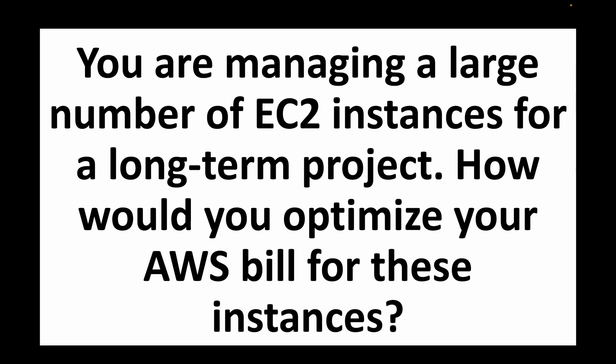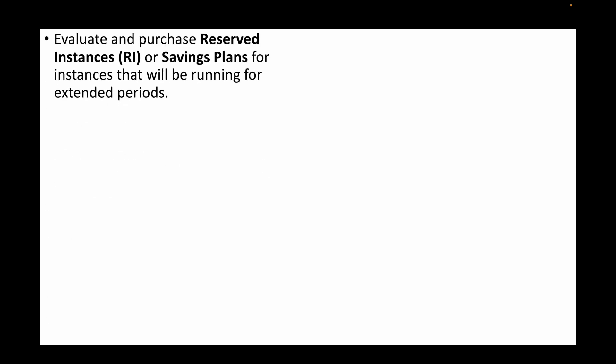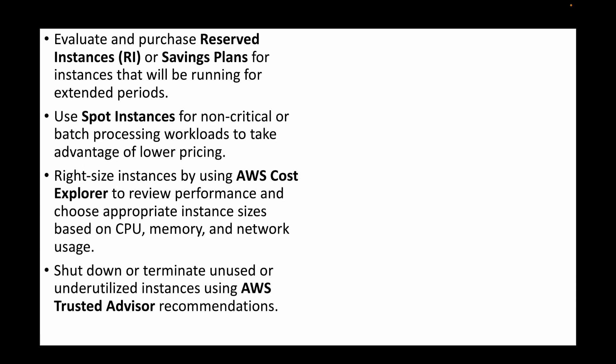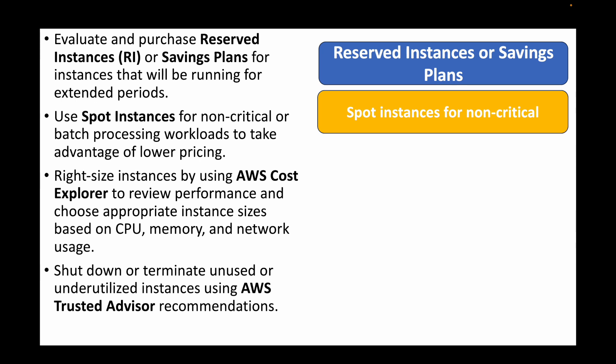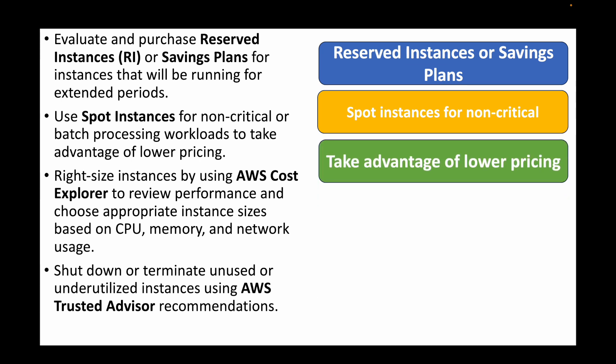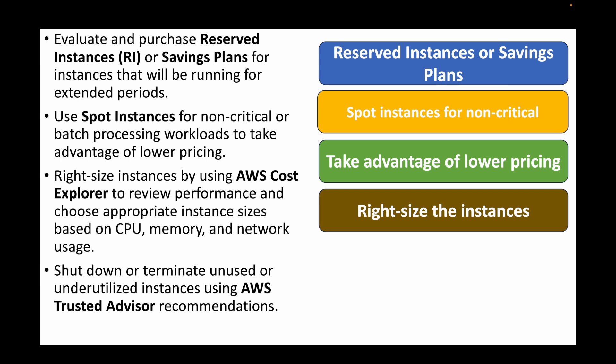The next question: you're managing a large number of EC2 instances for a long-term project — how would you optimize your AWS bill? We can evaluate and purchase reserved instances or savings plans to reduce cost for longer-running instances. We can also consider using spot instances for non-critical business workloads or batch processing to take advantage of low pricing. We can also right-size instances by using AWS Cost Explorer to review performance and cost, then choose appropriate instances based on CPU, memory, and network usage.